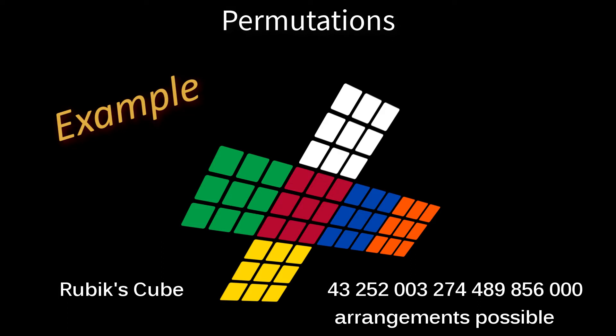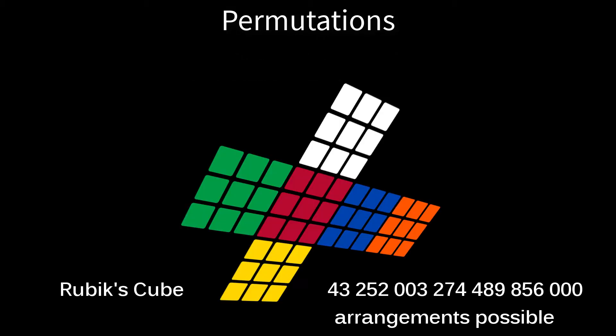What we just did was a permutation calculation. More specifically, since we only used each letter once, it's an example of a permutation without repetition. This was straightforward, but for things like a Rubik's cube, things can get more complicated.